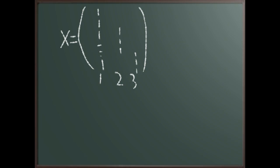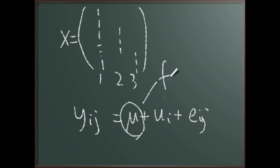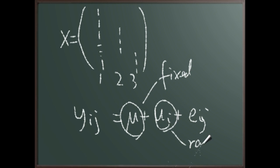Now we would like to write the same model — y_ij equals mu plus u_i plus e_ij — in a linear mixed model form. In that case we will treat the intercept as fixed effects and the person effects as random effects.